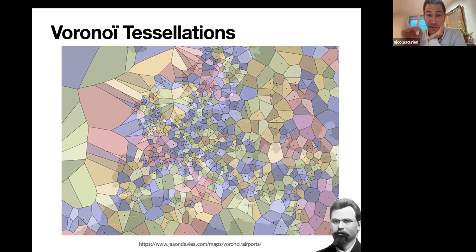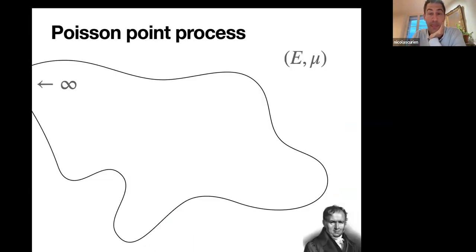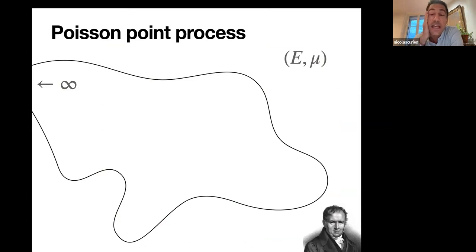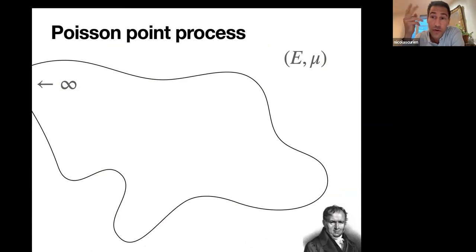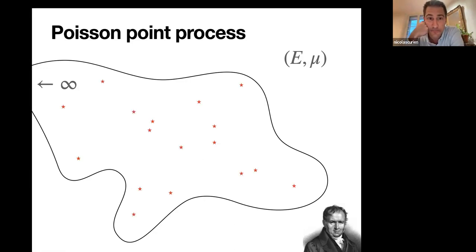We won't be interested in fixed or deterministic Voronoi tessellations, but random ones where the points are sampled according to a Poisson point process. I remind you what a Poisson point process is. Imagine you've got a space E and a measure mu, which in many cases of interest is infinite. You want to sample a point using this measure — you cannot, because the measure is infinite. But you can sample an infinite amount of points according to this measure. So you will have a random set of points on your space. They are countably many.